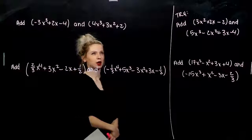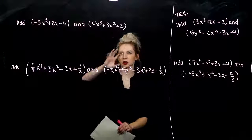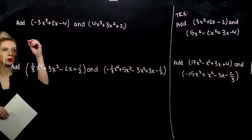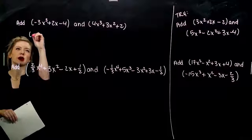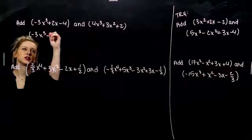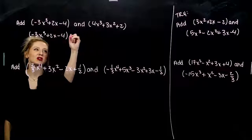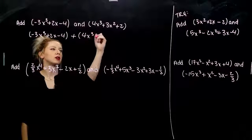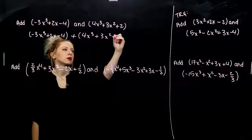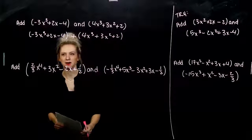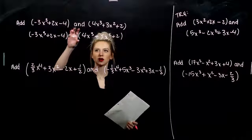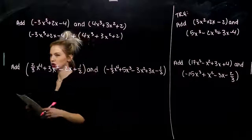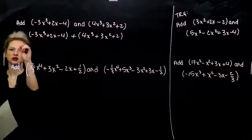So when we're adding polynomials, that first example, if I'm adding these two together, are the parentheses going to matter out front? I've got a 1 on the front and a 1 on the front, so no — we can drop those and combine our like terms.